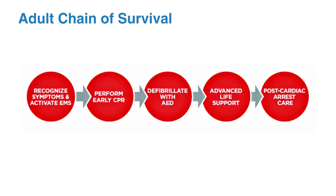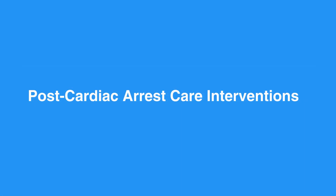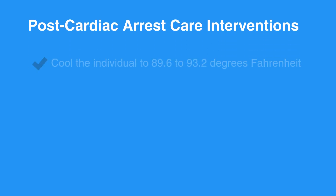Now let's look at the postcardiac arrest care interventions. Targeted temperature management is recommended for comatose individuals with return of spontaneous circulation after a cardiac arrest event. You should cool the individual to 89.6 to 93.2 degrees Fahrenheit, that is 32 to 36 degrees Celsius, for at least 24 hours.